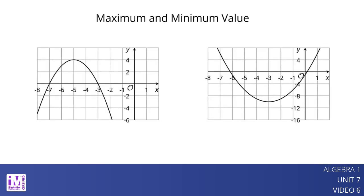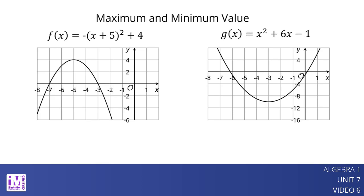Here are graphs for f(x) equals negative the quantity x plus 5 squared plus 4, and for g(x) equals x squared plus 6x minus 1.